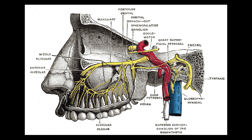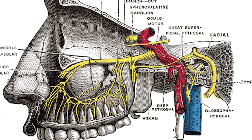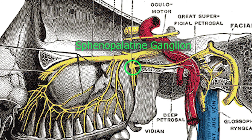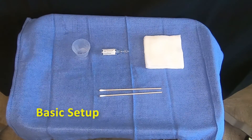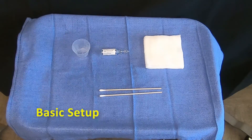The sphenopalatine ganglion block is a minimally invasive treatment option for post-dural puncture headache. This treatment blocks the parasympathetic signals of the sphenopalatine ganglion, which is located in the pterygopalatine fossa. This block requires a basic setup with minimal supplies.